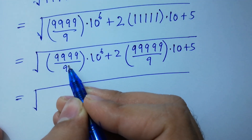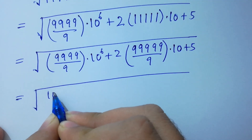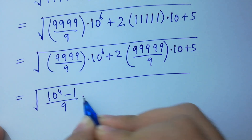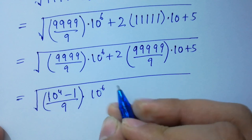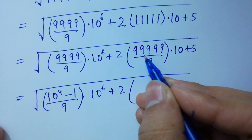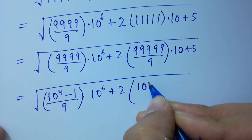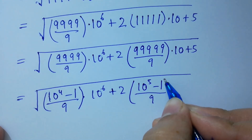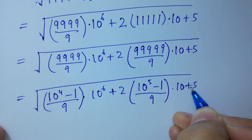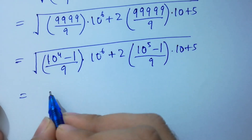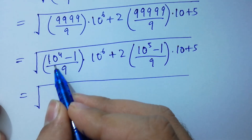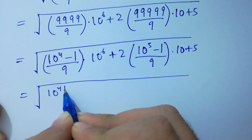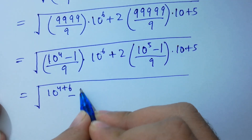4 times 9 is the same as 10 to the power 4 minus 1, over 9, as it is, times 10 to the power 6, plus 2. It is 5 times 9, so here 10 to the power 5 minus 1, which equals 4, 5 times 9, over 9 as it is, times 10, plus 5, 5. Next: 10 to the power 4 times 10 to the power 6 — base same, powers add — 10 to the power 4 plus 6, minus 1, times 10 to the power 6, is 10 to the power...